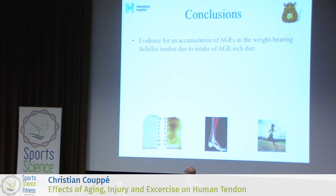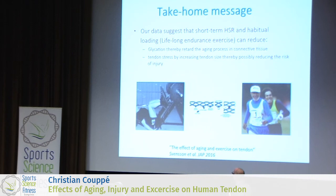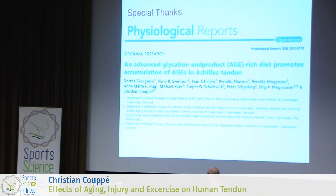In conclusion on the diet part: there is evidence for accumulation of AGEs in weight-bearing Achilles tendon due to intake of an AGE-rich diet, suggesting that food-related intake of AGEs could potentially alter tendon properties and represent a risk factor for tendon injury development. Training, both long-term and short-term, can decrease sugar crosslinks. By considering what we consume and exercising regularly, we can make tendon tissue less prone to injury and bigger through good training.